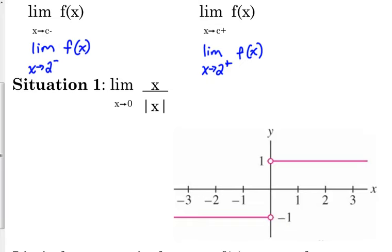Let's think about why the graph comes out this way. Think of a negative number, say negative three. If x is negative three, we've got negative three on top; the absolute value of negative three is positive three, so we've got negative three divided by positive three — that result is negative one. That's going to happen for any negative number. So any time your x value is negative, your y value from this function is going to be negative one. Any positive x value — say positive two: two over the absolute value of two is two over two, which is positive one.